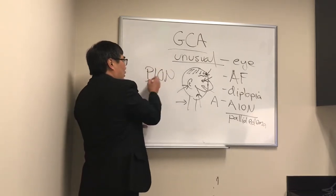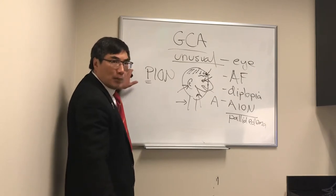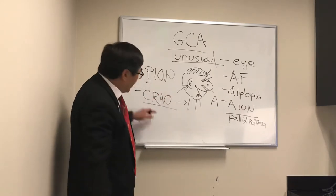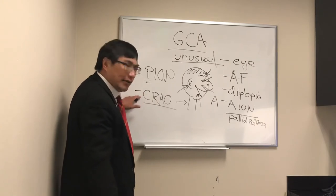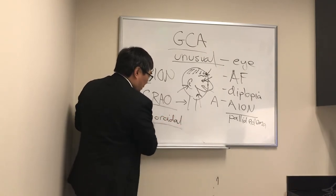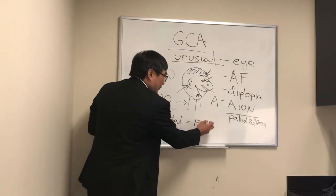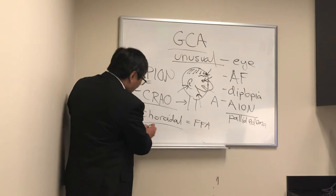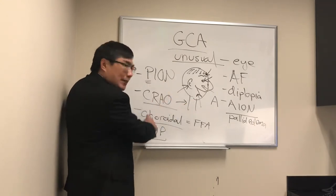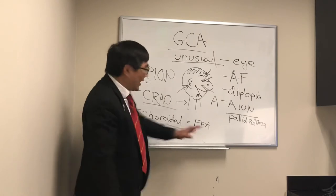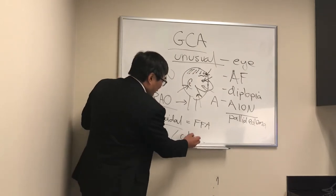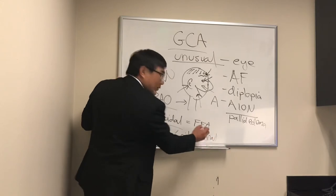Giant Cell Arteritis can present as PION — posterior ischemic optic neuropathy — where the disc is normal, a retrobulbar optic neuropathy in the elderly patient. It can also present as a non-embolic central retinal artery occlusion (CRAO) — if we don't see an embolus but see a cherry red spot. Additionally, a choroidal perfusion deficit (usually requiring fluorescein angiography to identify), multiple cotton wool patches, ciliary retinal artery occlusions, or ophthalmic artery-level occlusions — any combination of these are hallmarks of unusual presentations of Giant Cell Arteritis.